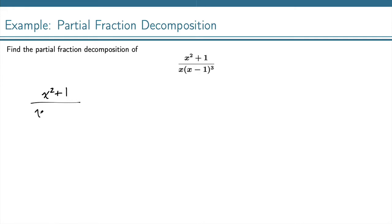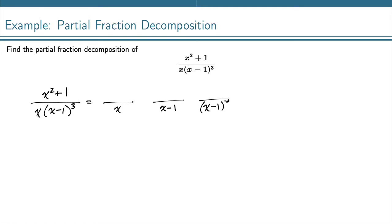We've got our factored form already. The x and the x minus 1 are both linear factors, so we know that we're going to have an x, and this x minus 1 to the 3 — we actually need to work our way up to the exponent. Whatever factor you have, you need a fraction with each power up to and including the power that's there. And because x and x minus 1 are linear, that means we're going to get constants on top: A, B, C, and D. So this is the form of the partial fraction decomposition for this fraction.